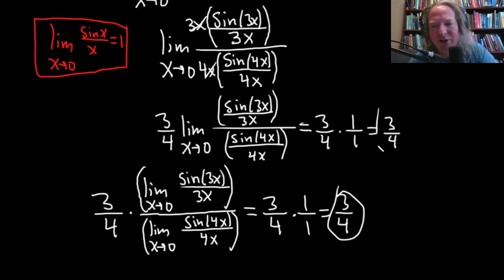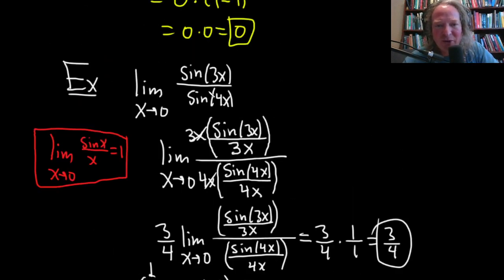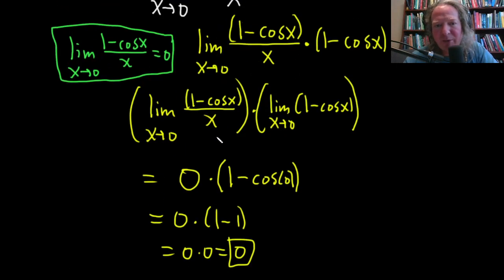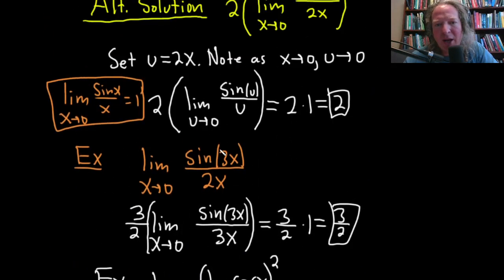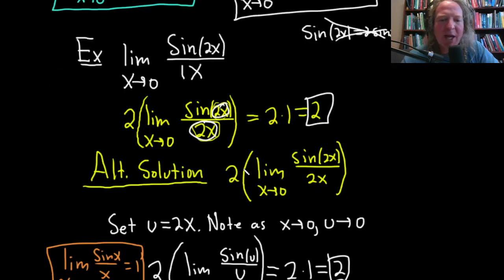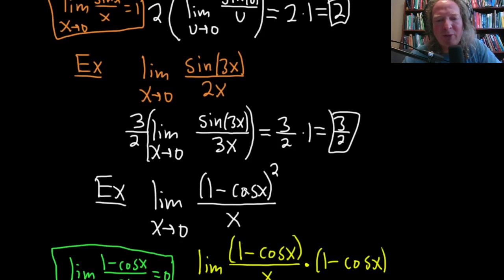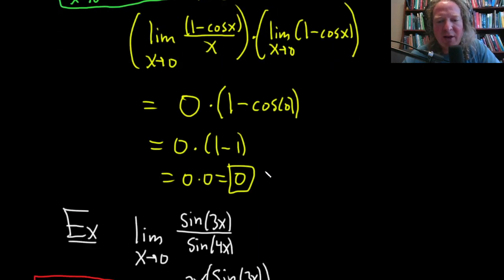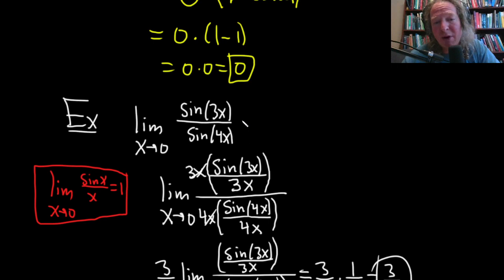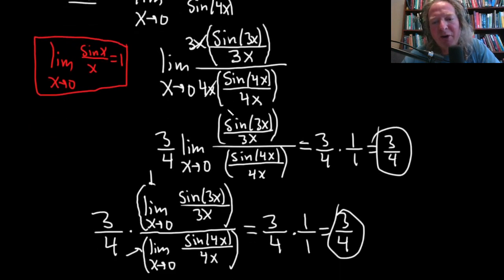Those are the two special formulas. We did a really easy example first, then one that was a bit harder with a different coefficient. We did a simple example applying the other formula, and finally this one — which most calculus books include, usually with a hint — because it's pretty tough to figure out on your own if you've never seen it.